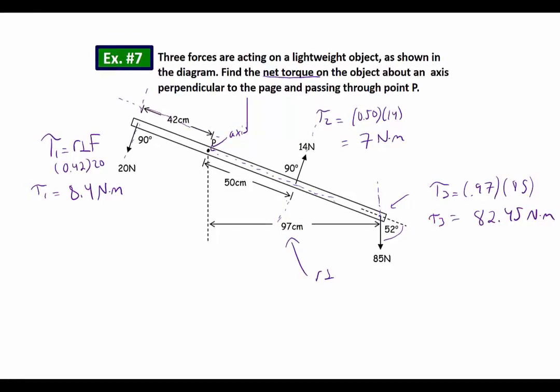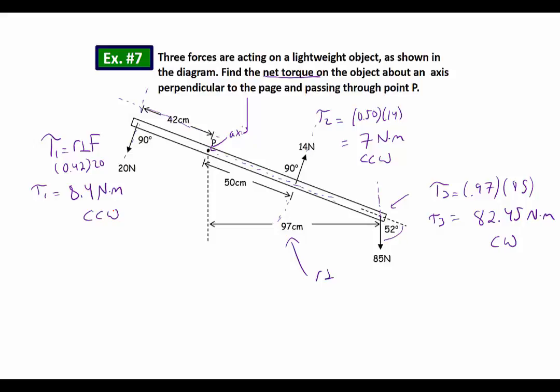So now I've got these three torques, and I need to figure out, okay, which direction is this going to be rotating, clockwise or counterclockwise? So I look and see that torque 3 is definitely going to be trying to rotate this thing clockwise. I see that torque 1 is going to be going clockwise. Torque 2 is going counterclockwise, and torque 1 is going counterclockwise.